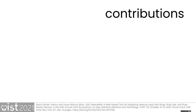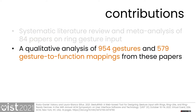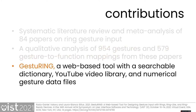Our goal is to structure this fragmented landscape and to provide resources to foster design and engineering of interactive systems employing ring gestures. Our contributions are multiple. We report results from a systematic literature review on ring gesture input that included 84 papers addressing this topic. By analyzing the results reported in those papers, we catalogued nearly 1,000 ring gestures and identified 579 mappings between ring gestures and system functions. We also deliver our findings as actionable resources for practitioners.